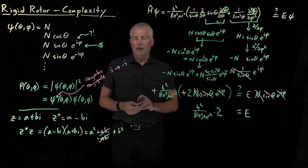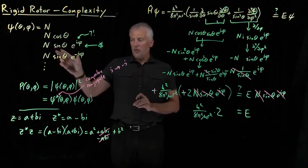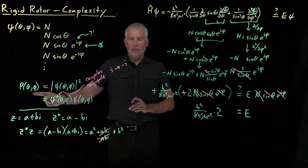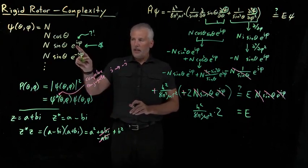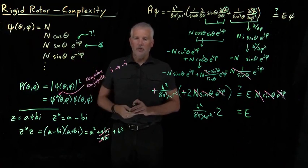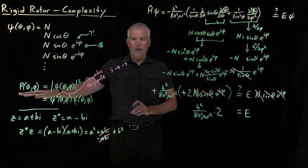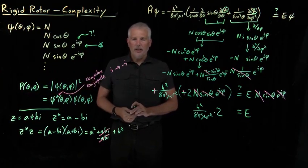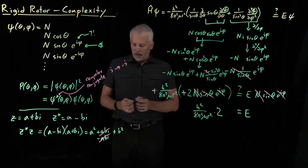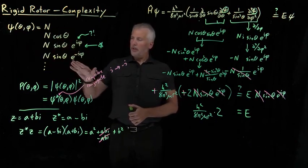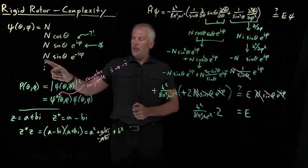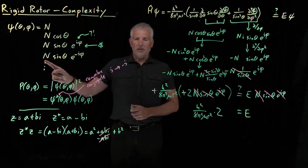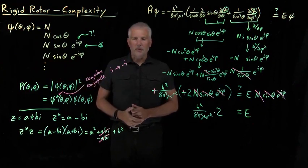Wave functions aren't real-world properties of molecules — they are used to generate measurements, predictions, and probabilities that do end up having real values. The imaginary numbers in these wave functions might be a little worrying at first, but they're there for a good reason and don't cause any problems with real measurements. We've almost completely understood these wave functions for the rigid rotor, but we don't yet know what the normalization constants are, so that's the next thing we'll tackle.